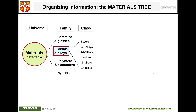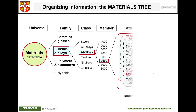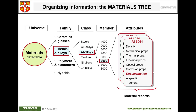Within metals, you choose whether to use steel, aluminum, titanium, and so on. If you choose aluminum, there are different alloys available, and you can narrow it down further — for example, to the aluminum 6000 series.